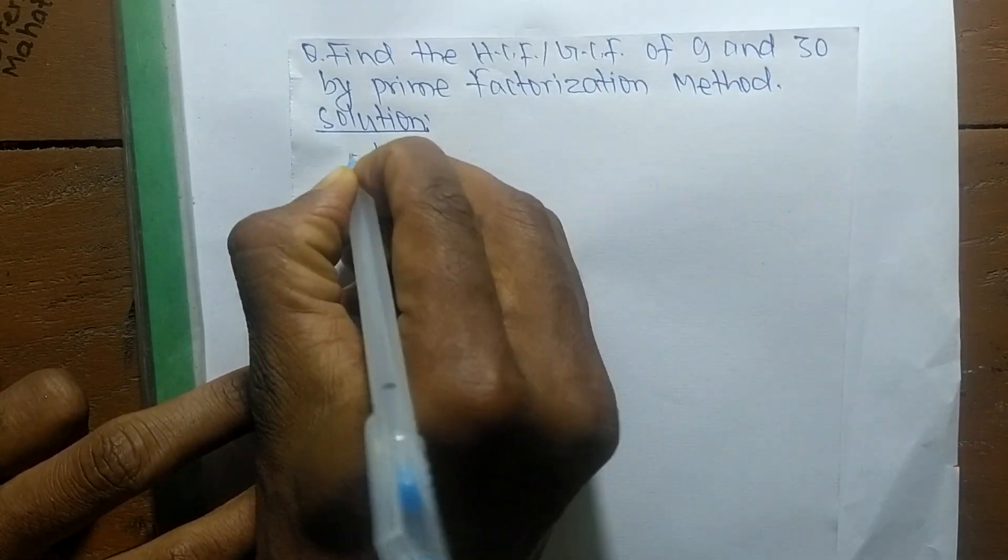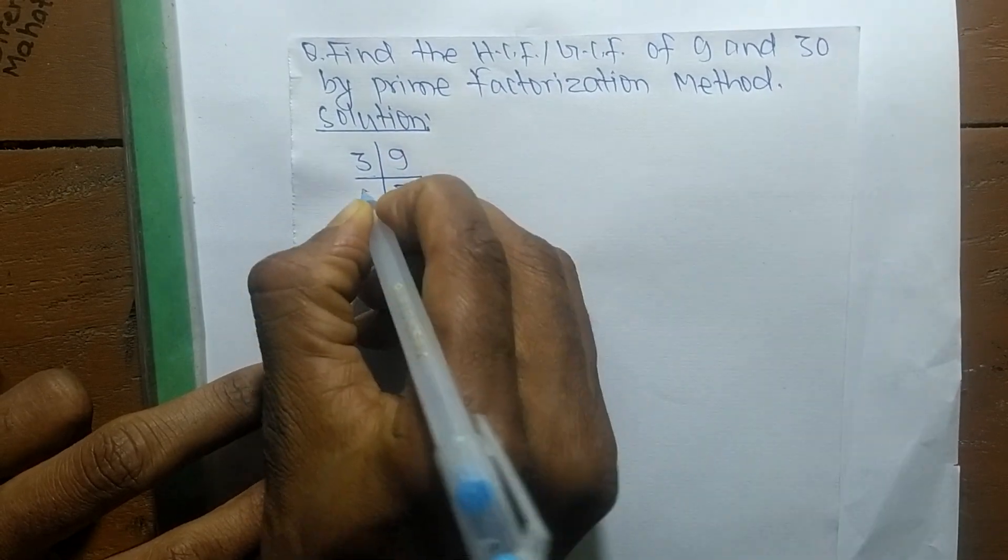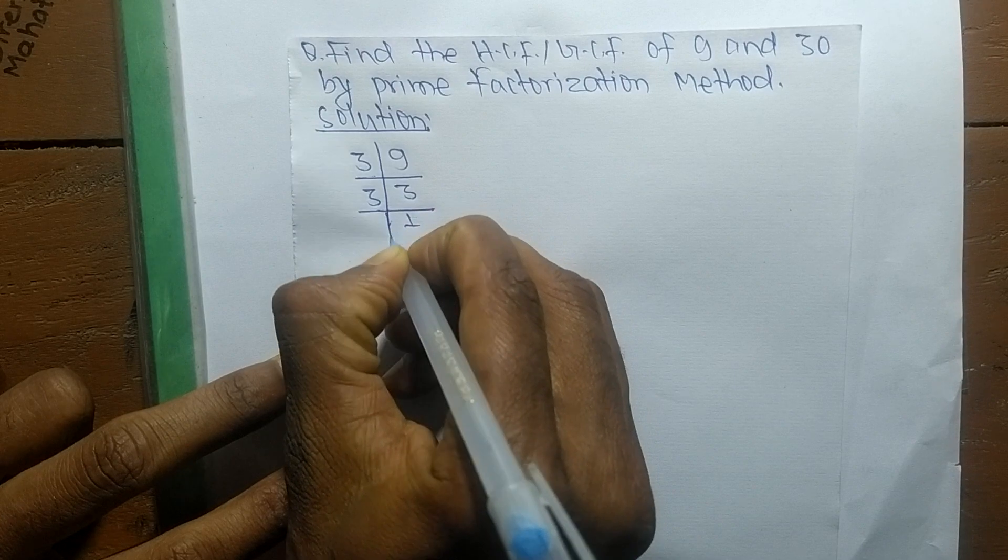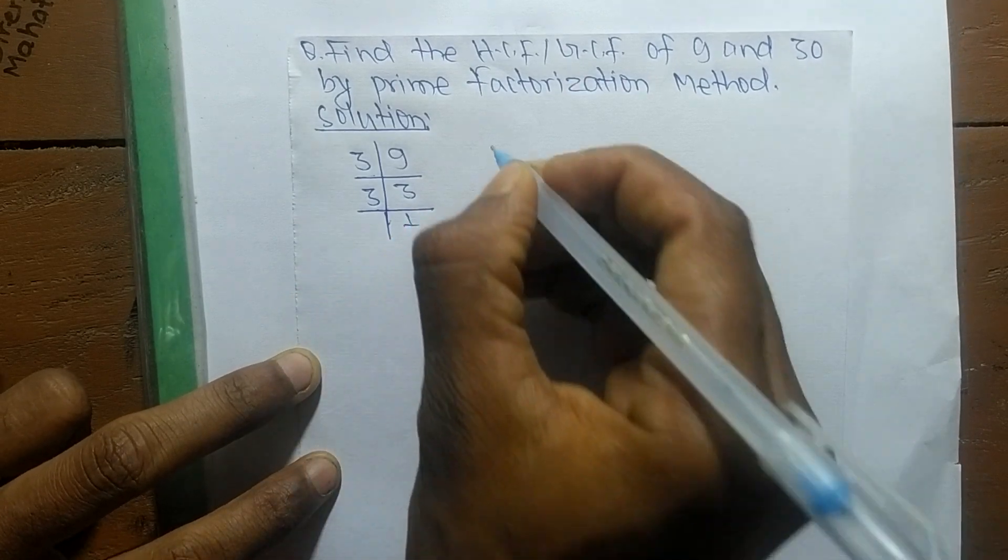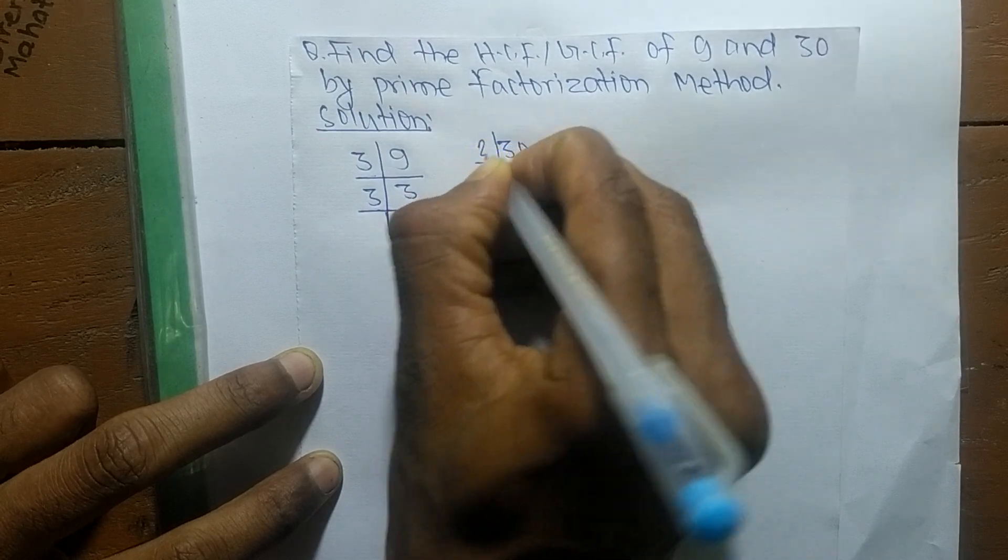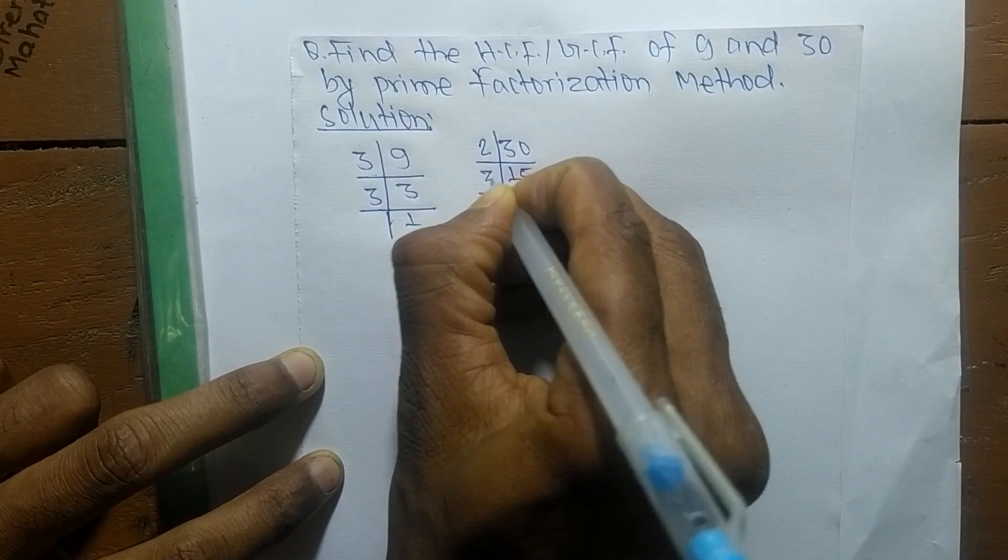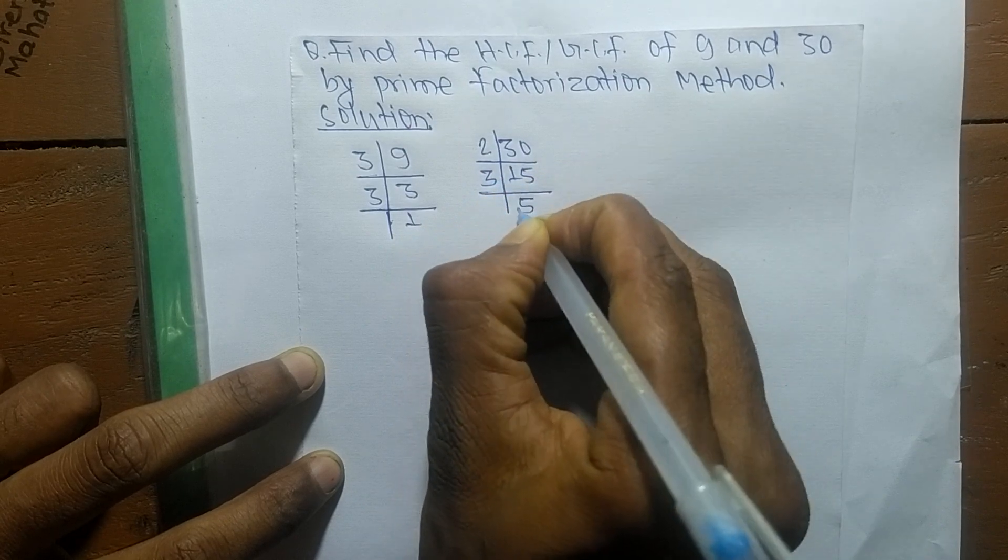The prime factors of 9 is 3 times 3, which means 9. In the same way, the prime factors of 30 is 2 times 15, which means 30, and 3 times 5 means 15.